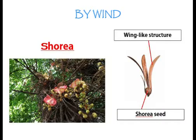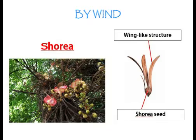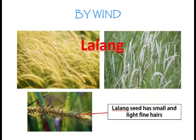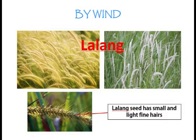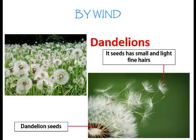This is shorya. Shorya has wing-like structures on its seeds, similar to helicopter propellers, and the seeds can be blown far away by wind. The seeds of lalang and dandelion have small, fine hairs that enable them to be blown away and dispersed by wind.